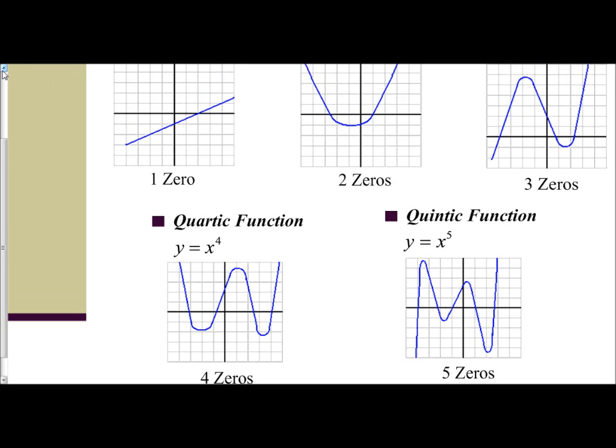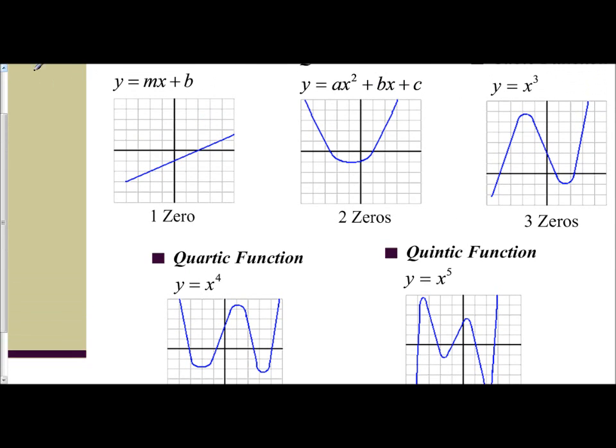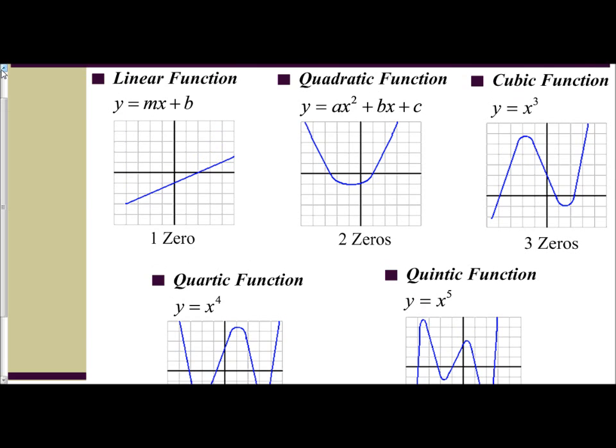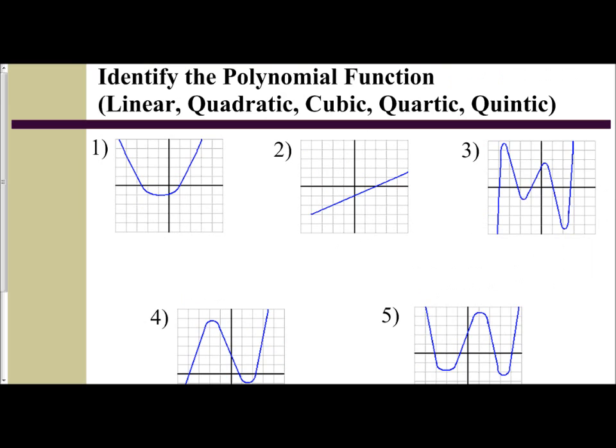Cubic for three, quadratic for two, and one for linear. So let's try this out. We're going to identify the polynomial function represented from here, and let's go ahead and use our zeros to assist us with this. So I look at the first graph—I see it is u-shaped, so that right away should tell me it's a quadratic from what we have in our prior knowledge. I also see there are two zeros, so therefore it is a quadratic.